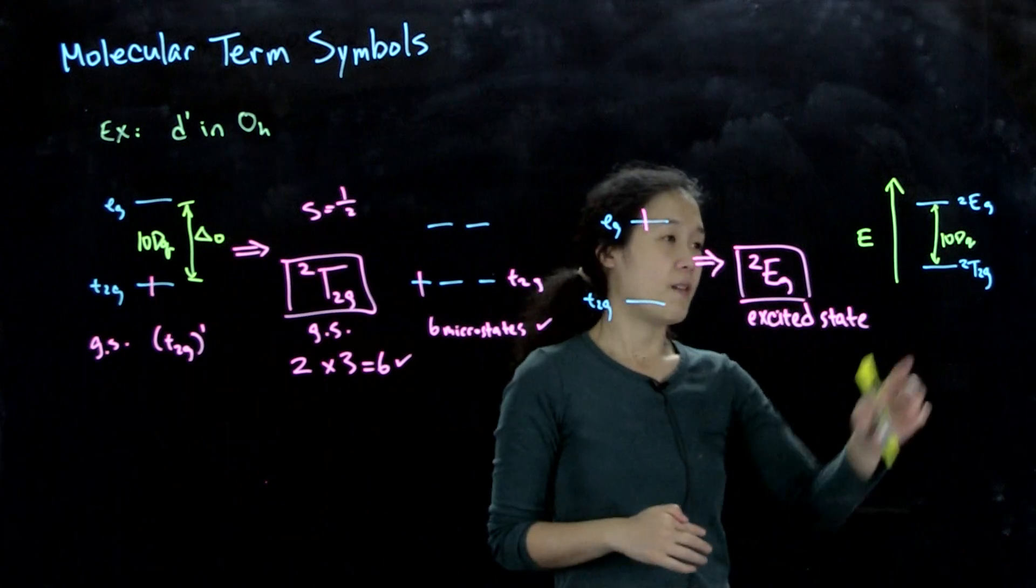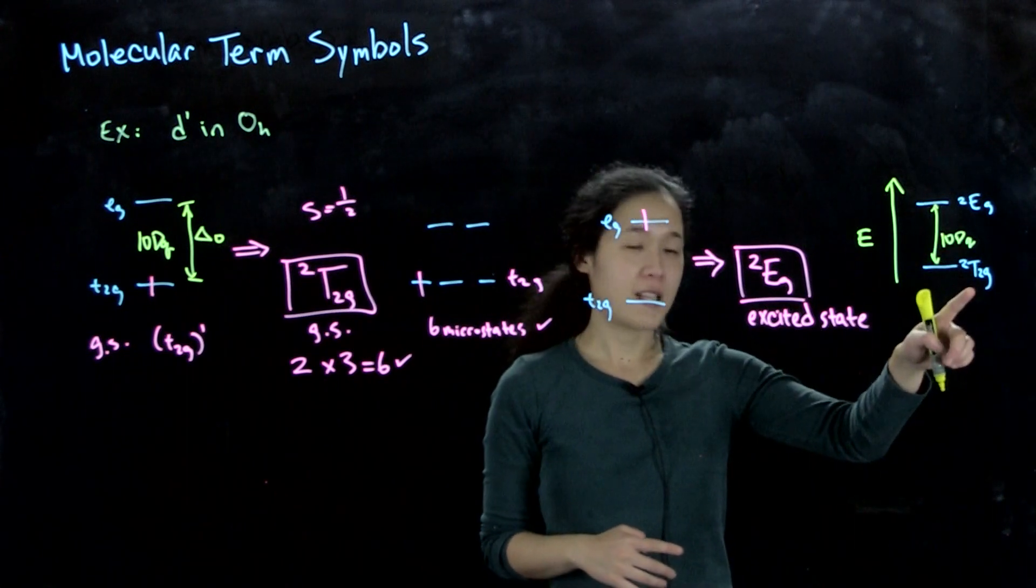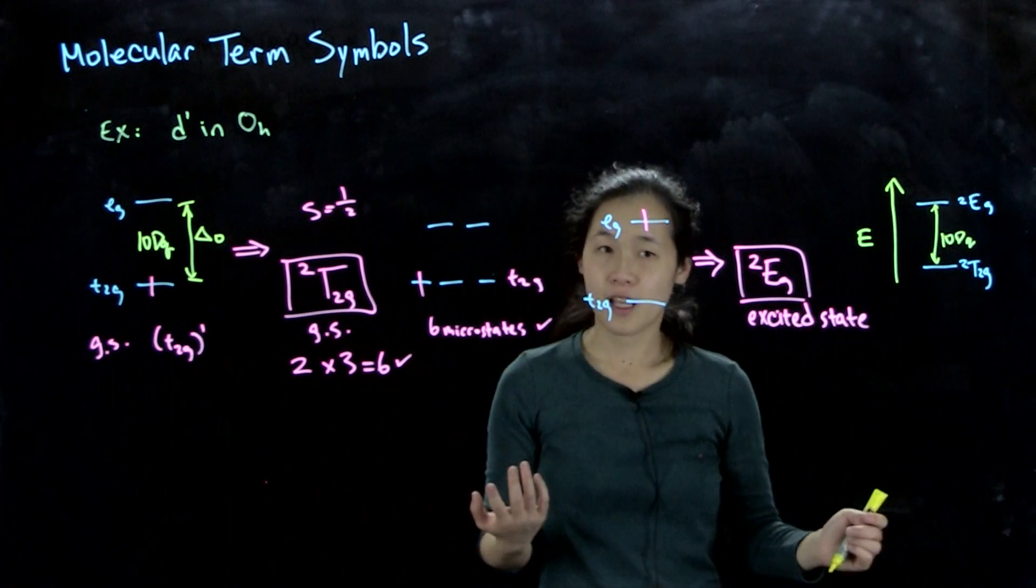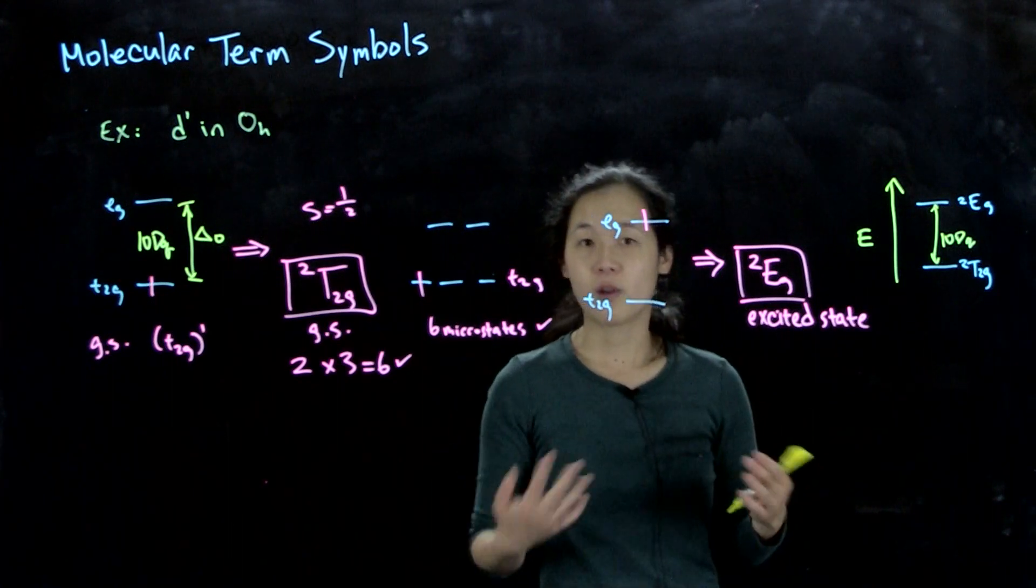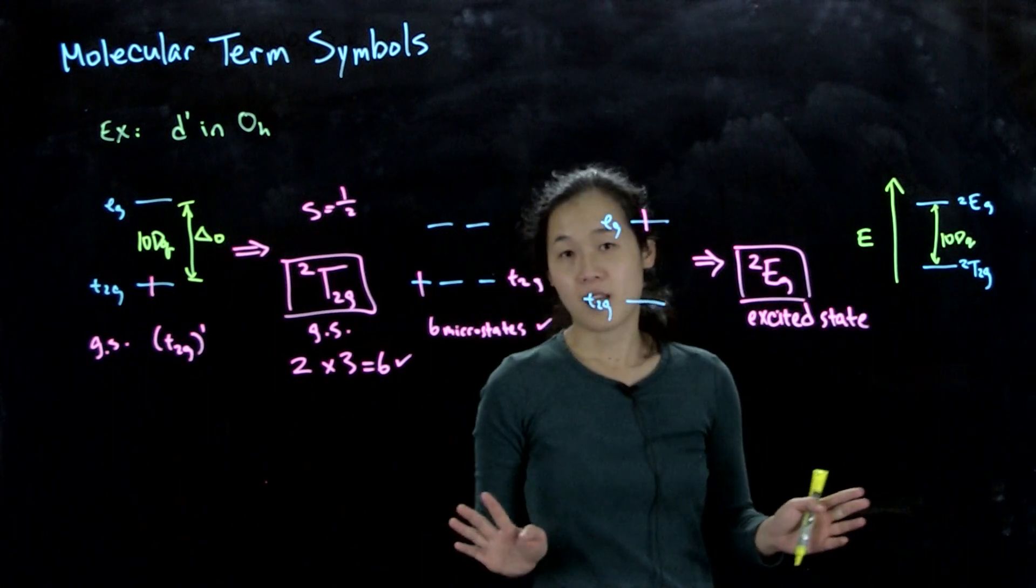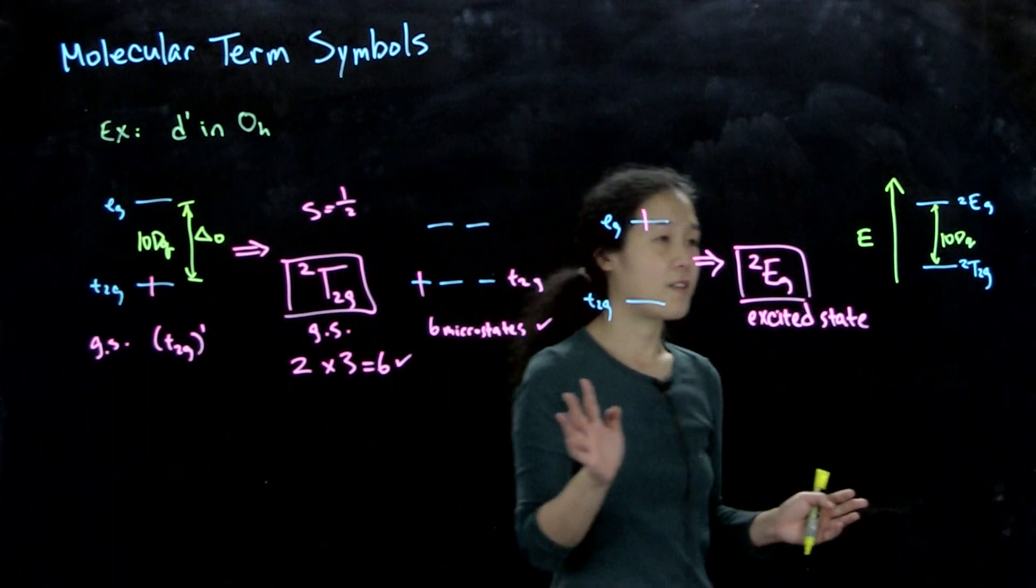And although here we have states that correspond to the orbitals that the electrons are in, that is not always the case, which in the following example when we have more electrons, multiple electron molecules, that this will not be the case. And things will get more complicated. So be aware of that.